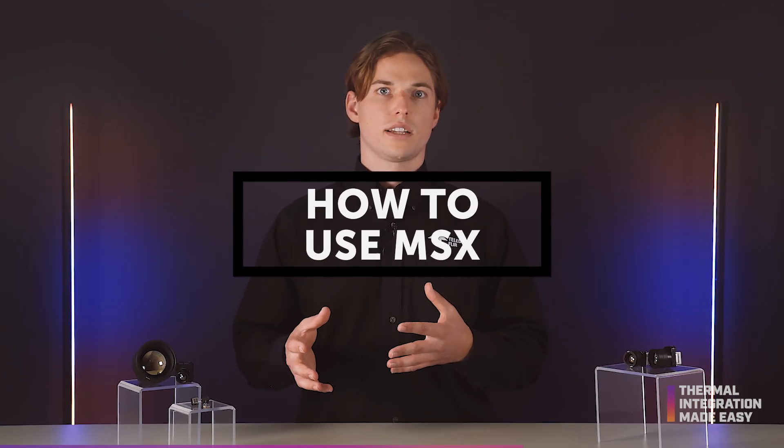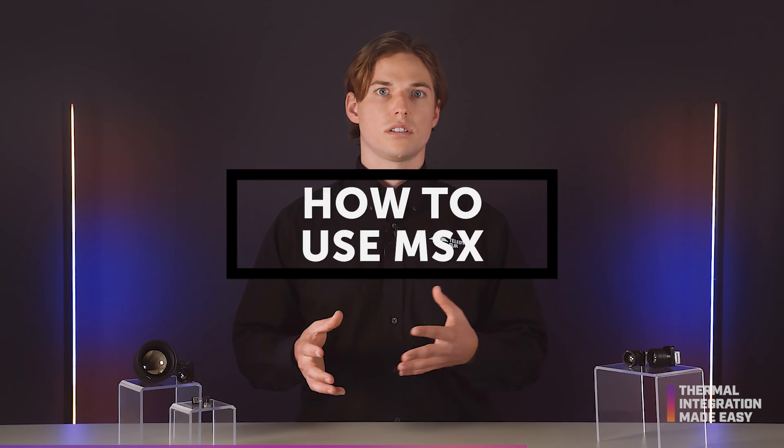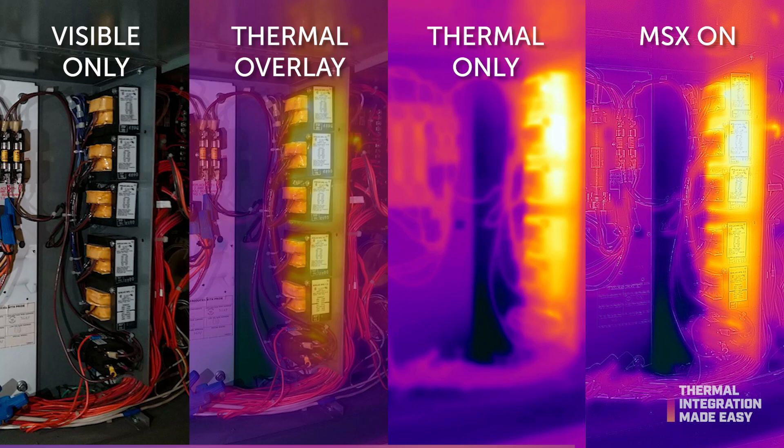When you're on site, it's likely clear what you're observing, but relying solely on a thermal image might lead to confusion later without reference points. When using MSX on the MyFlir app, the app records both a visible and a thermal image at the same time. MSX eliminates the need for capturing additional visible light images and allows devices to execute program functions based on the capture and processing of images.